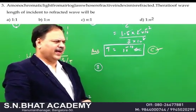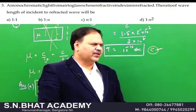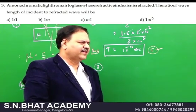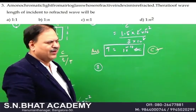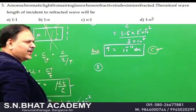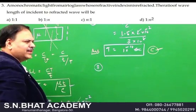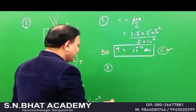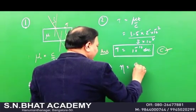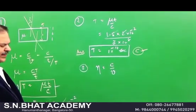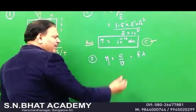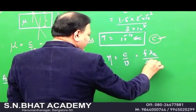Question number 3: monochromatic light passes from air to glass with refractive index n. Find the ratio of the wavelength of the incident light to the refracted wave. The absolute refractive index equals velocity in air divided by velocity in medium, which equals fλ_air / fλ_medium using v = fλ.